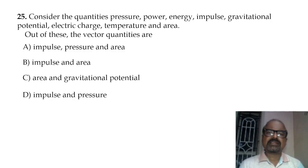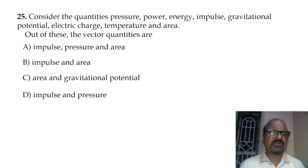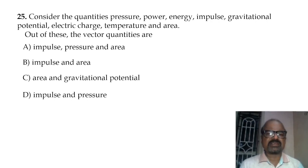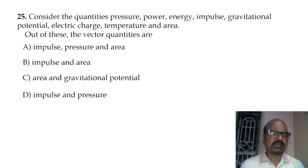Consider the quantities: pressure, power, energy, impulse, and gravitational potential. Out of these, the vector quantities are impulse and area. Impulse is a vector, area is a vector quantity.